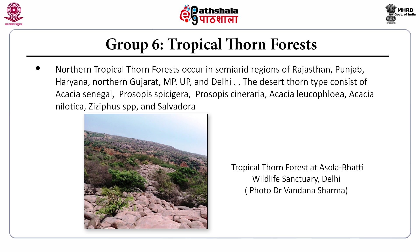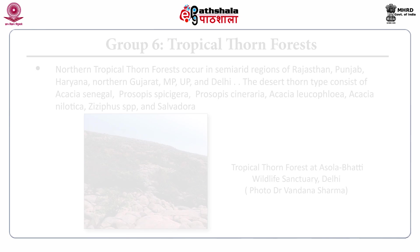The northern tropical thorn forests occur in semi-arid regions of Rajasthan, Punjab, Haryana, northern Gujarat, MP, UP, and Delhi. The desert thorn type consists of Acacia senegal, Prosopis juliflora, Prosopis cineraria, Acacia leucophloea, Acacia nilotica, Ziziphus species, and Salvadora species.